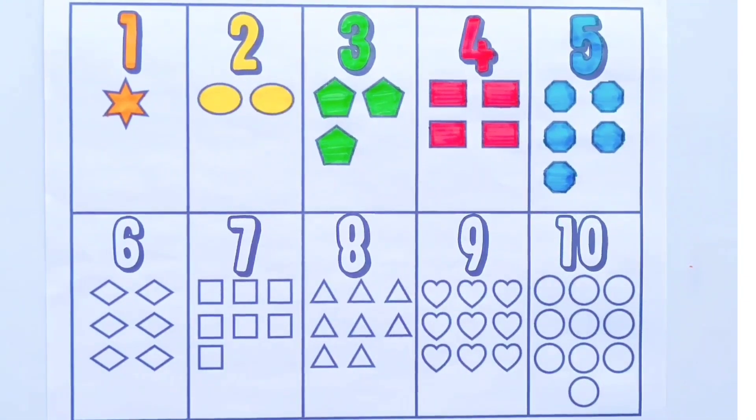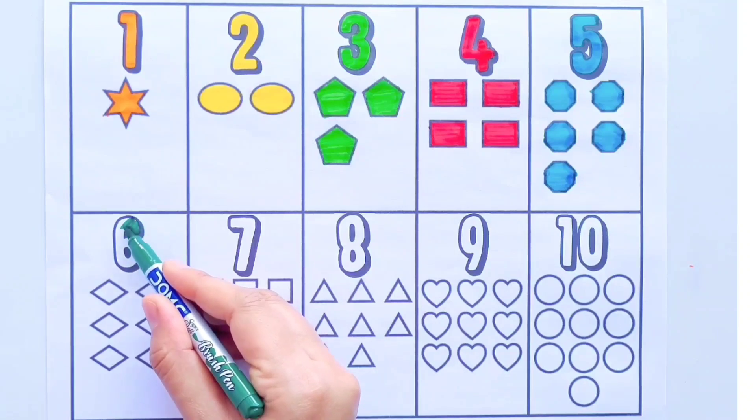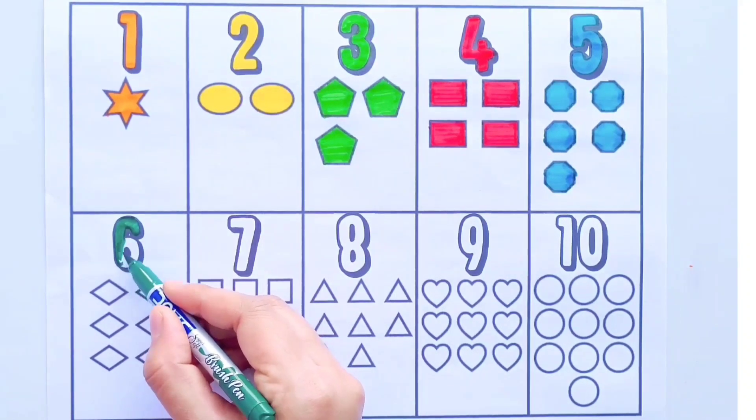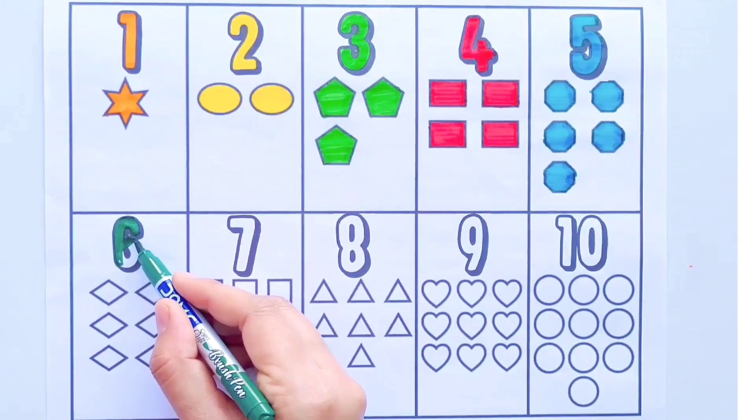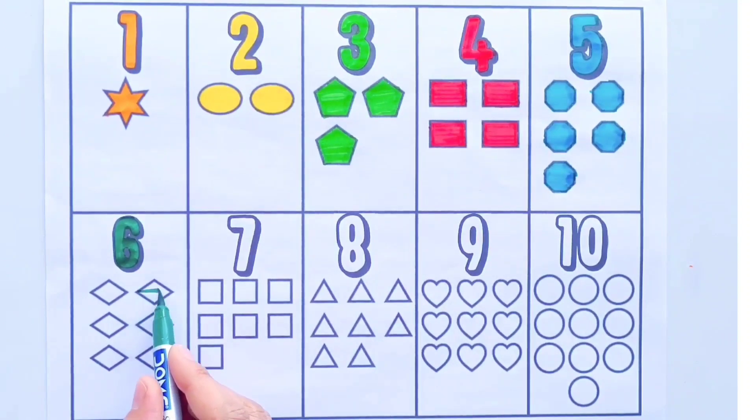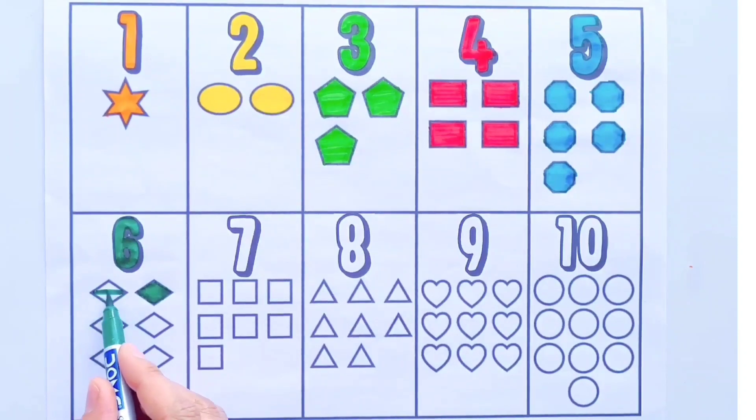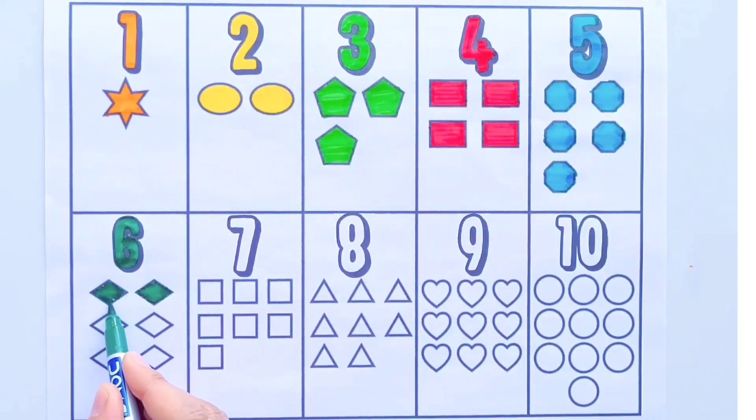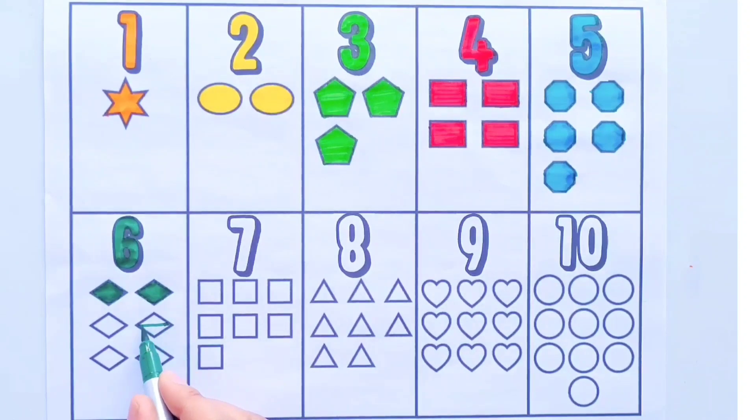Green color. Six. One, two, three, four, five, six. Six diamonds.